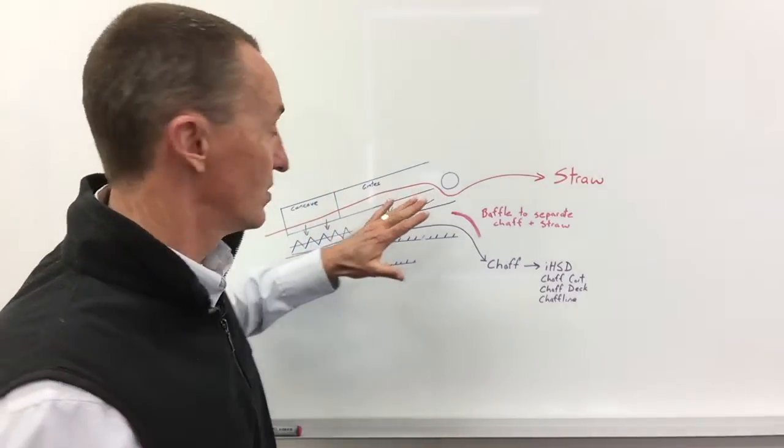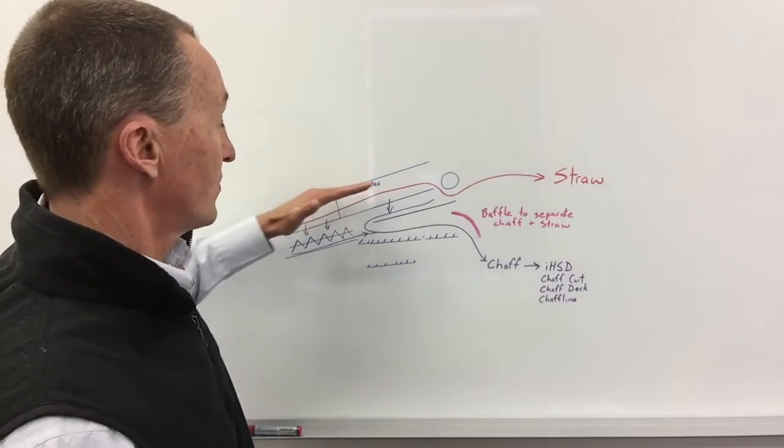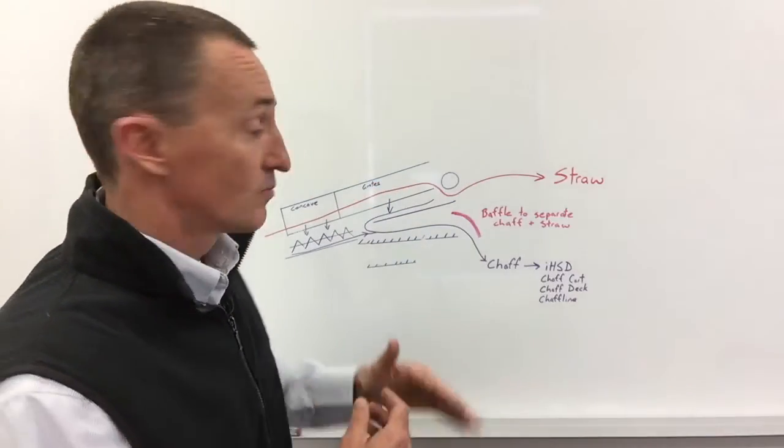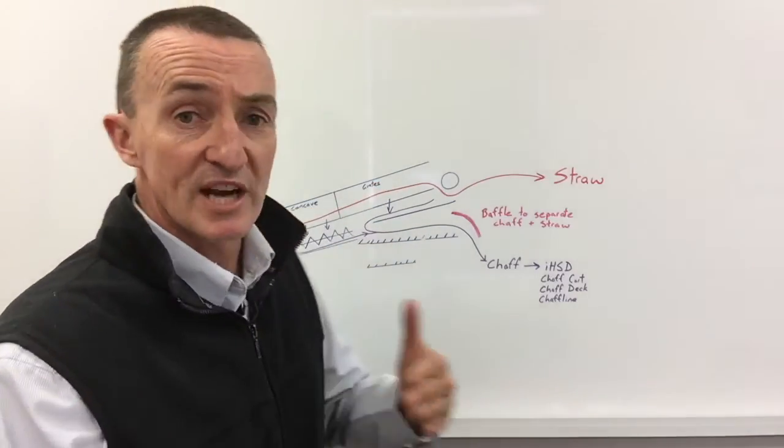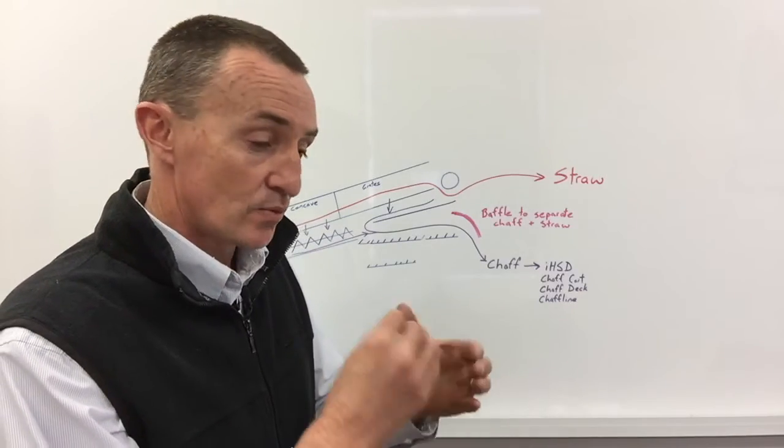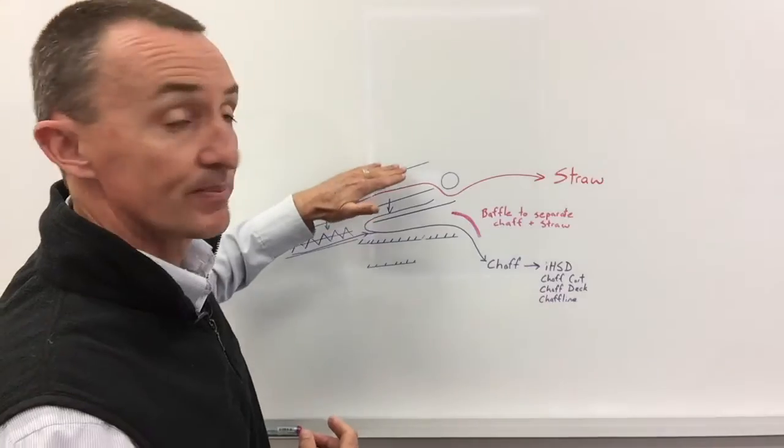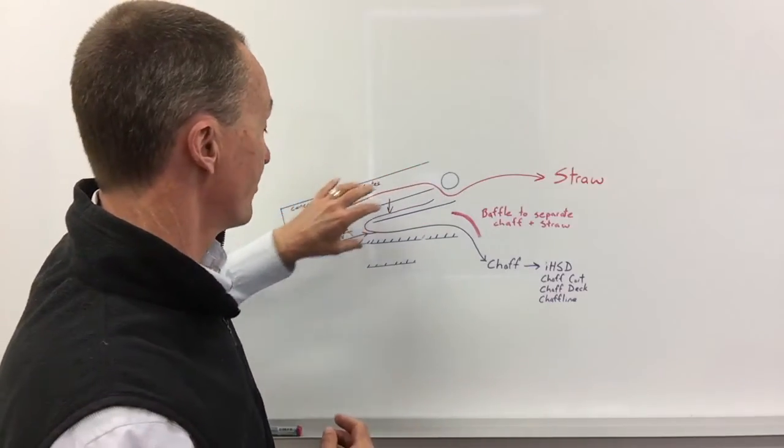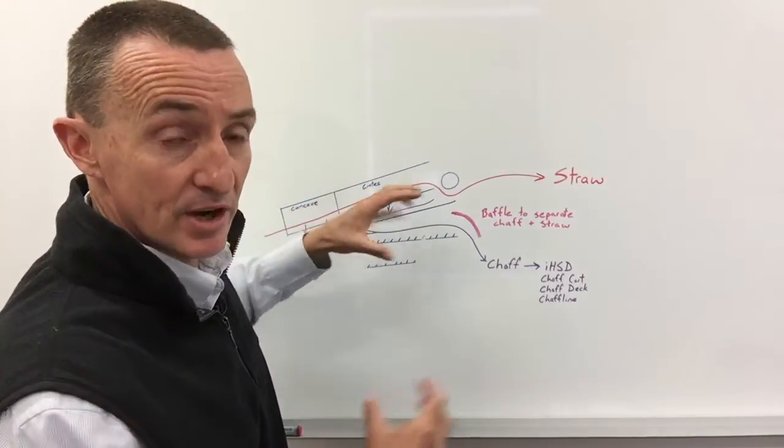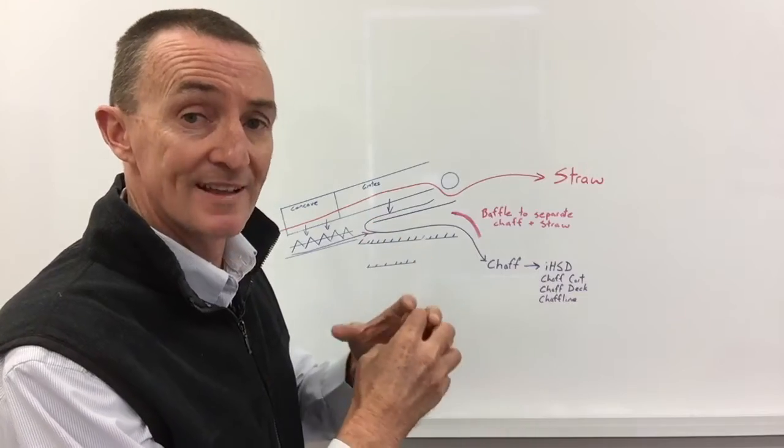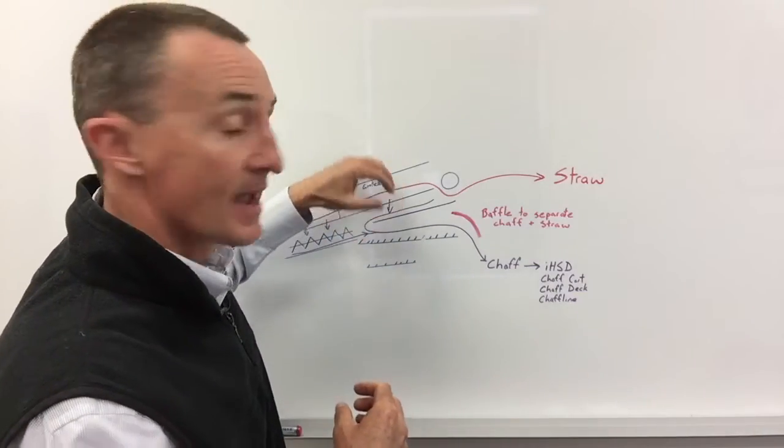Firstly, we've got to thresh the weed seeds. Ray Harrington would tell us we've got to thresh hard enough so that we get the weed seeds out of the seed heads. That's step one. Step two, we've got to be prepared to open these grates up or open up the concave. We've got to open that rotor up to get the weed seeds out of the rotor and onto the sieves. If the weed seeds stay in here, they're going to go out in the straw.